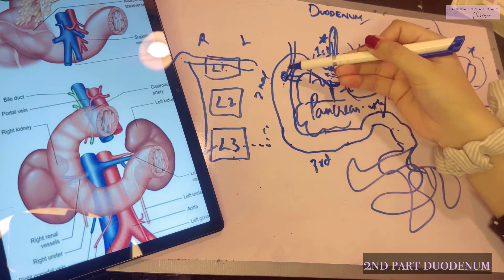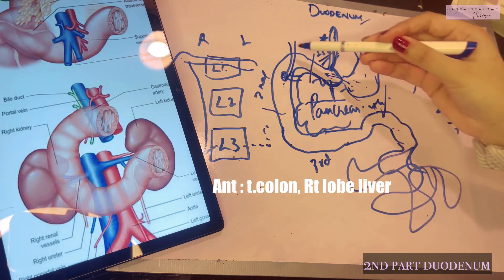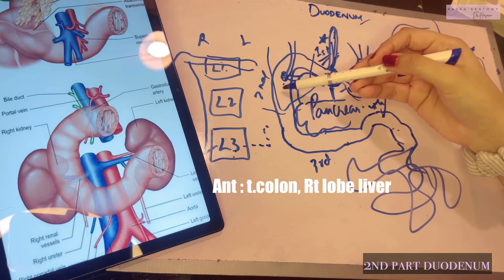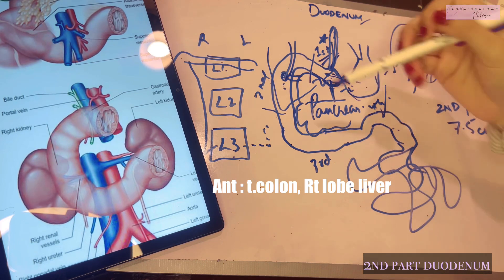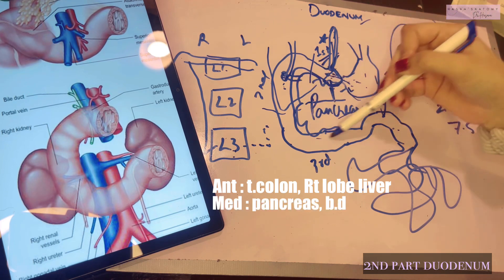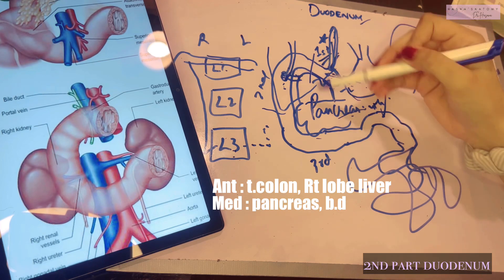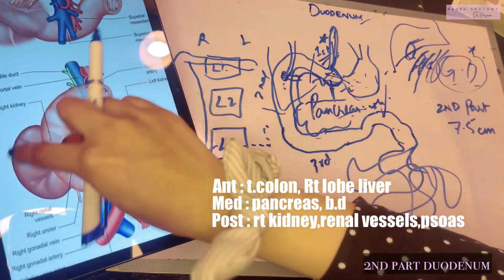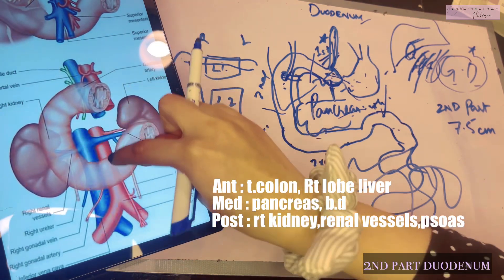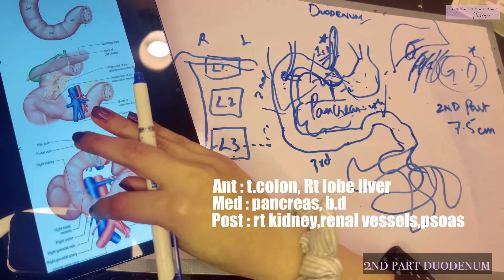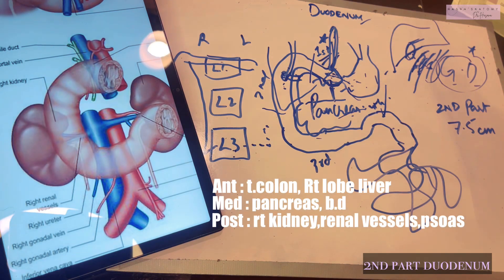The second part is mostly retroperitoneal and fixed. Anteriorly lies the transverse colon and the right lobe of the liver. The medial relation is the head of the pancreas, with the bile duct also considered a medial relation. Posteriorly lie the right kidney and right renal vessels; you can also see the inferior vena cava, the aorta giving the renal vessels, and the psoas major muscle of the lower back.